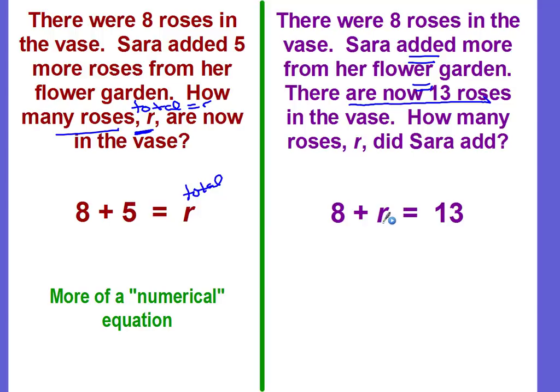So this is what we would call more of an algebraic equation, because you know the total and you're solving for a variable. This is the difference between the numericals and the algebraic. And we're going to be learning how to write the algebraic type of equations.